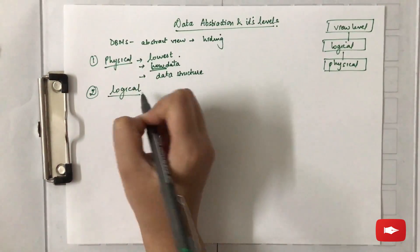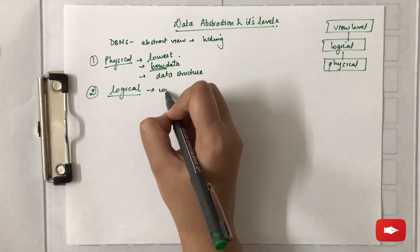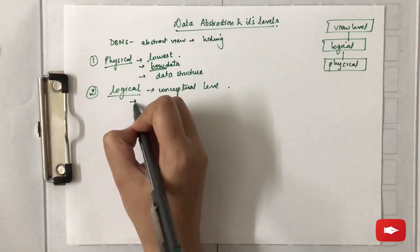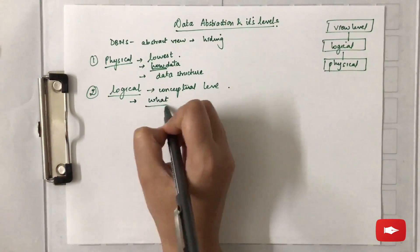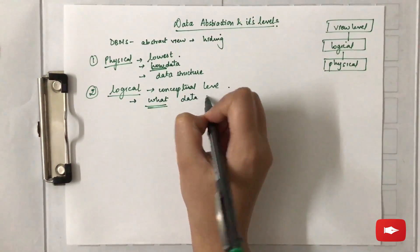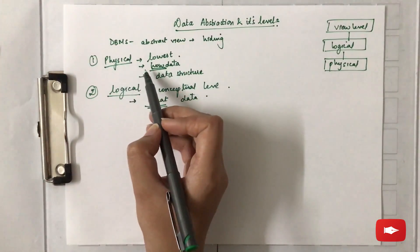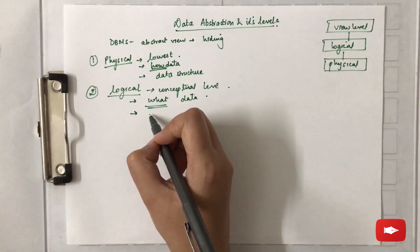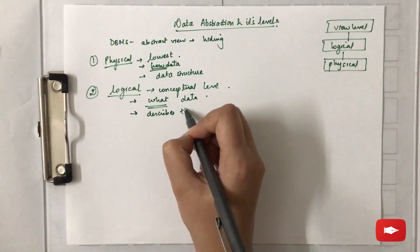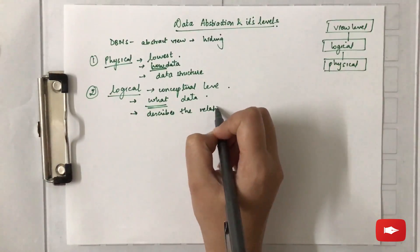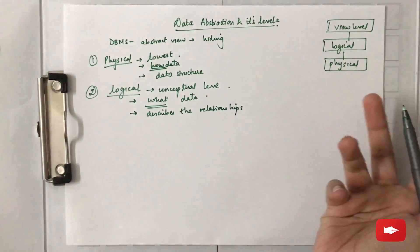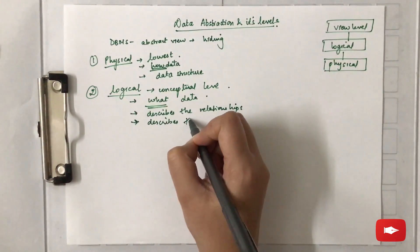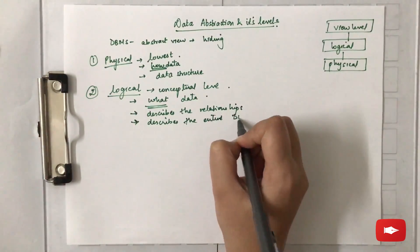Next we talk about the logical level, which is the intermediate level and is also known as conceptual level. It focuses on what data is stored in the DBMS. It describes the relationships that exist among the stored data, so it on the whole describes the entire database.